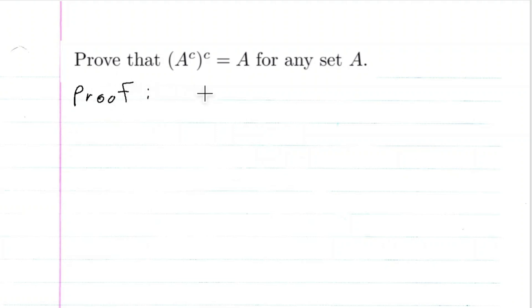All this is doing is using the definition of the complement of a set twice. We'll have X is an element of A complement complement. So by definition, this means that X is not an element of A complement.